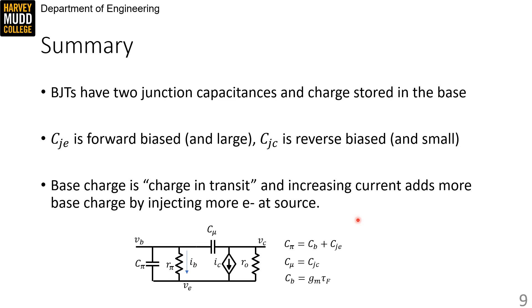And base charge is charge in transit across the base. And increasing current means that we have more base charge, more total charge in transit, because we're injecting more electrons at the source.